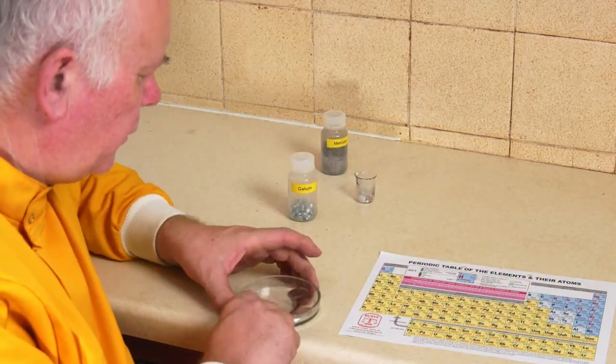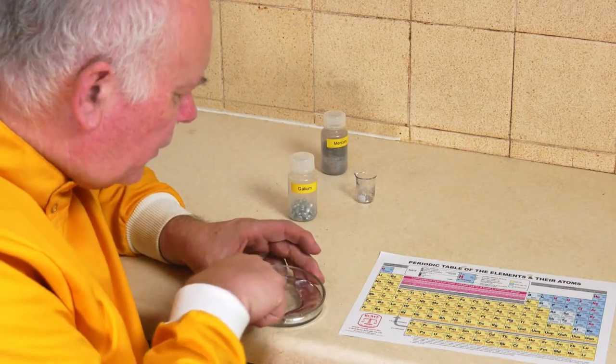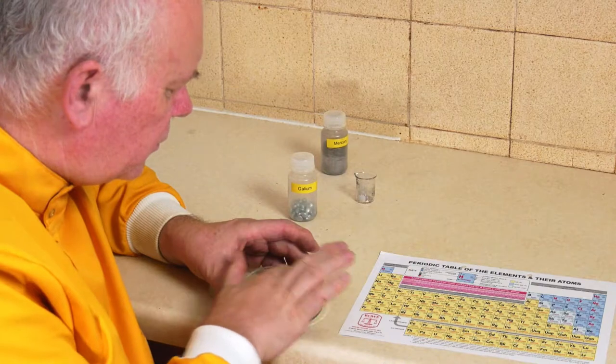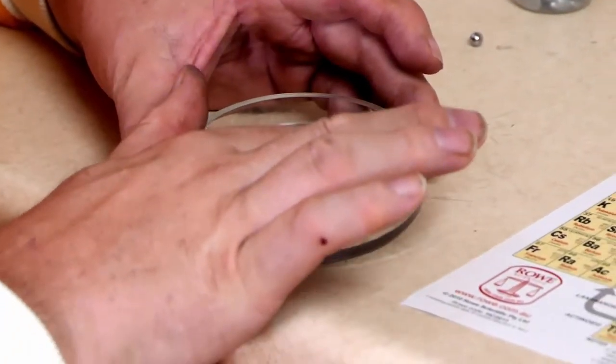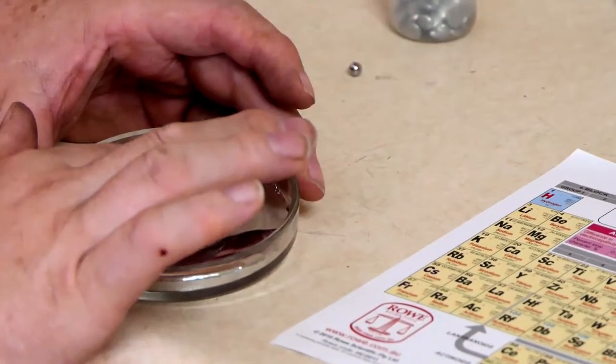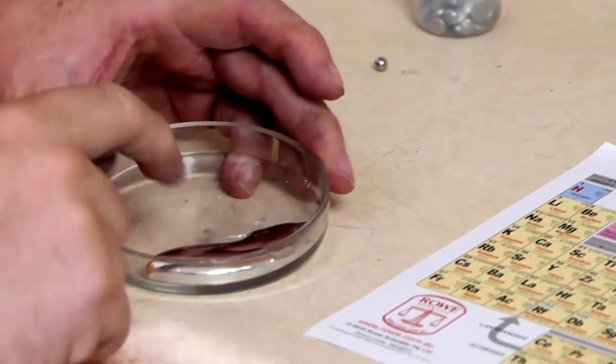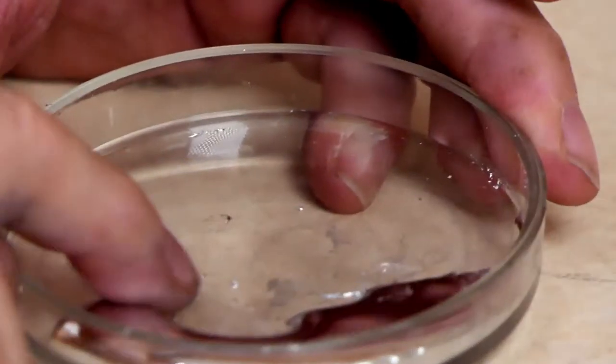So let's have a look at this gallium, see what it's like. Well, it sort of sticks a bit to the glass. It's got a sort of film on the surface. It can make my finger go a little bit black. It's not toxic unlike mercury.